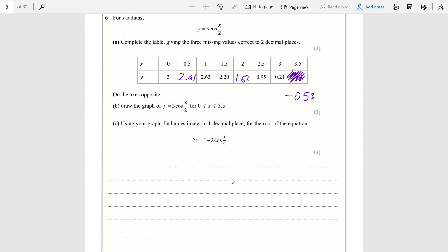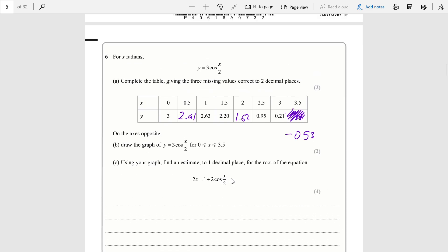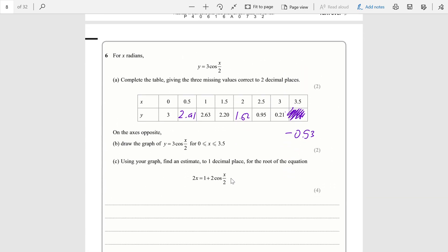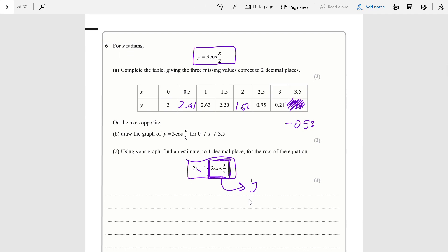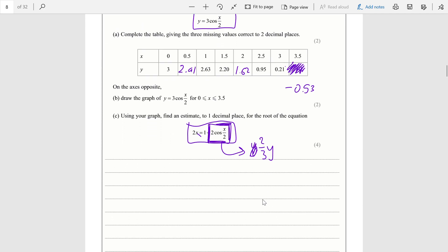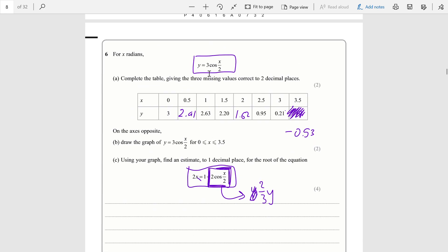So this is the part where a lot of people get tripped up. Using your graph, find an estimate to one decimal place for the root of the equation 2x = 1 + 2cos(x/2). Obviously it's saying use your graph, so you're going to be using the graph of 3cos(x/2). Now you want to find this, which is 2x = 1 + 2cos(x/2). The first thing you might notice is that this term here looks a lot like the y term. It's two-thirds of y.